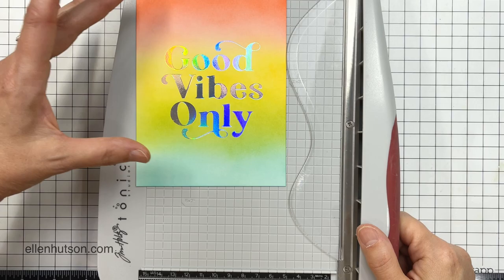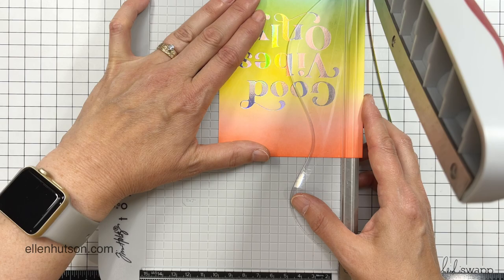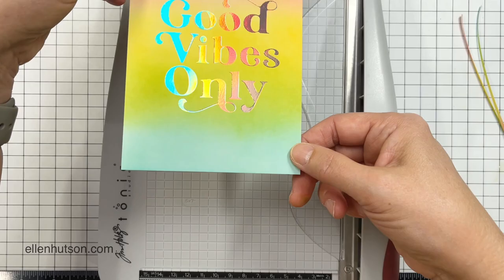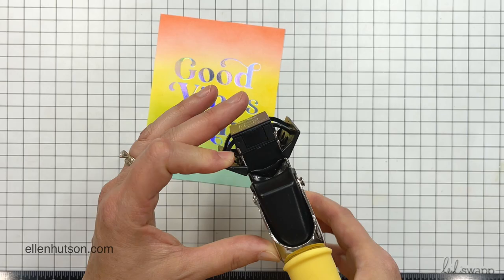I did have a slight bit of over-foiling, but because it wasn't the hot foil stamp itself that was applying the pressure—it just happened to be where it was taped down—it didn't actually foil it into the paper. I could take that white artisan eraser and just erase away that over-foiling that occurred. In my opinion, a little bit of over-foiling is better than having some under-foiling.